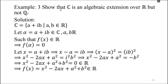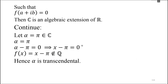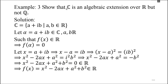Another example: show that C is an algebraic extension of R. Let me show you the set of complex numbers — it is an algebraic extension over R, but not over Q. You have checked the reals — R is not an algebraic extension of Q. Now C is not Q. We will tell you that the complex numbers form an algebraic extension over R.